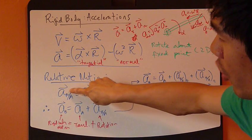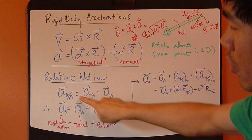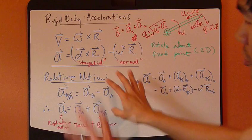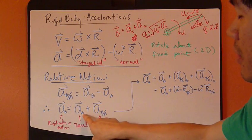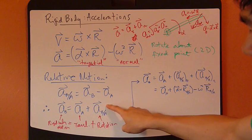The acceleration of point B relative to A equals acceleration of B minus acceleration of A. So we move things around. So acceleration of B equals a_A plus this relative acceleration.